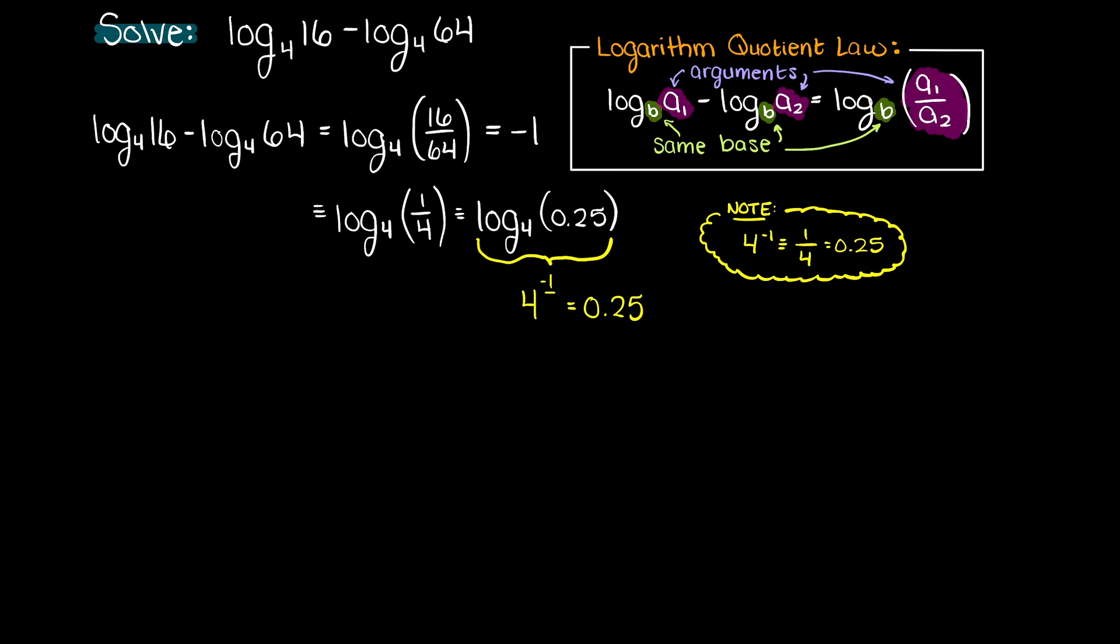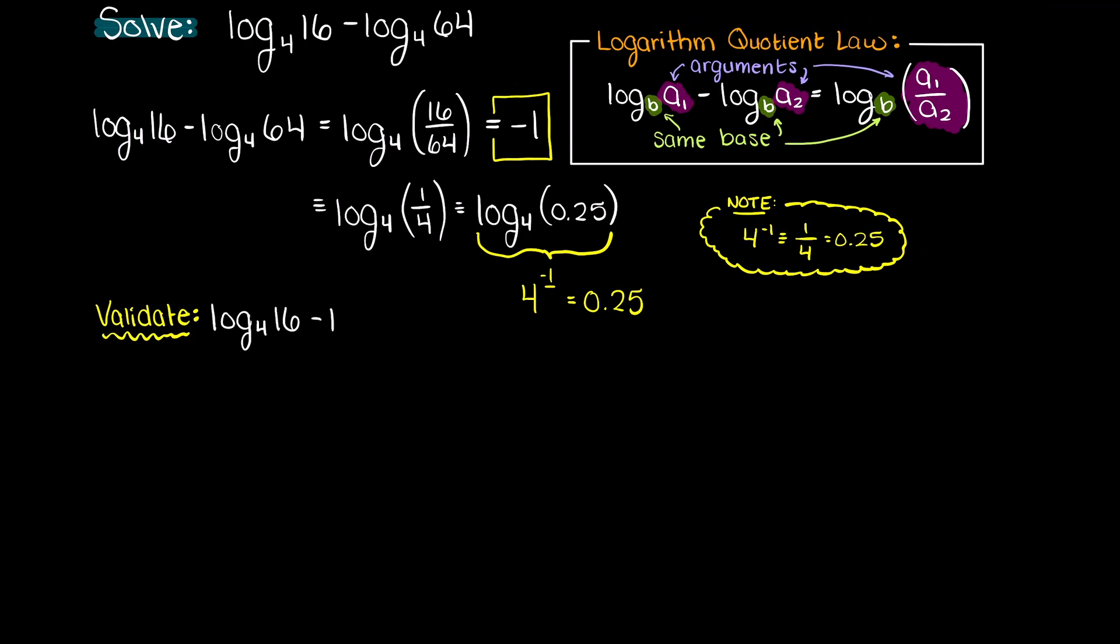Another way to validate this solution is through solving these two logarithms and finding the difference. So, 4 to the power of 2 is 16, and 4 to the power of 3 is 64. So, we have 2 minus 3 is equal to minus 1, which validates our result from earlier.